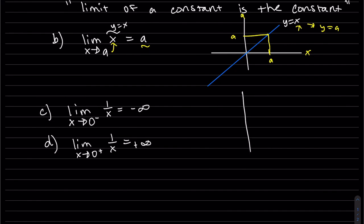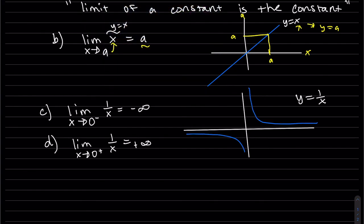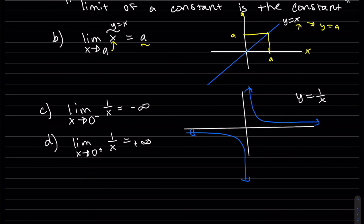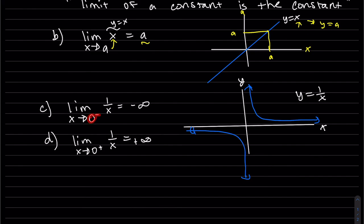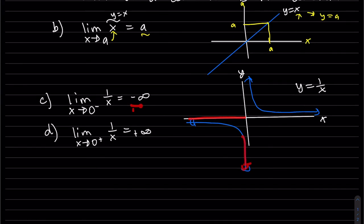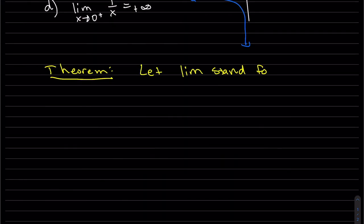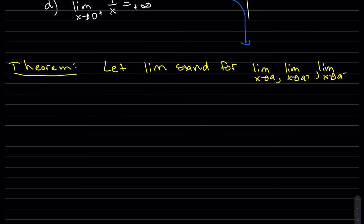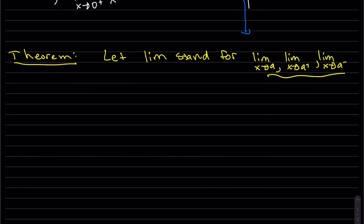For the next two cases, we're looking at the graph of y equals 1 over x. Approaching x equals 0 from the left, we can see that the y value is going to negative infinity. Coming in from the right, the y value is going to positive infinity. So let the limit stand for any of these three limits: x approaches a, a from the left, or a from the right.